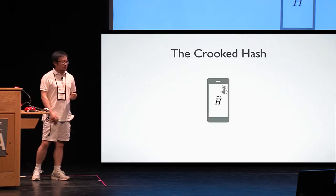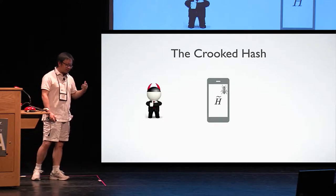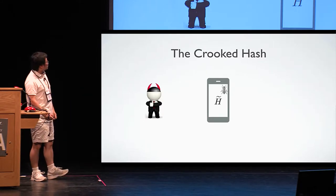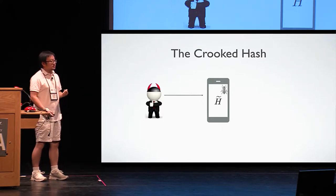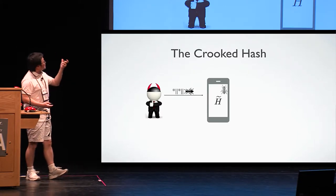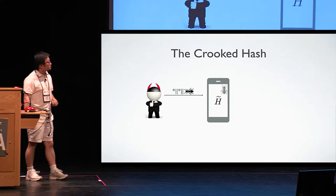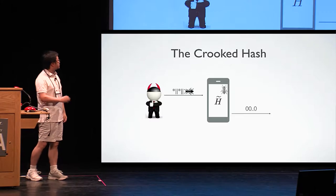Let's consider a simple way of crooking this hash. So we have the subverted implementation. The designer, or not the designer, the implementation provider or the malicious manufacturer, designs a very special trigger such that if the last couple bits of the input contains a very special string that is only known to the manufacturer, this hash function simply outputs zero.